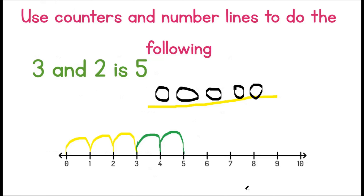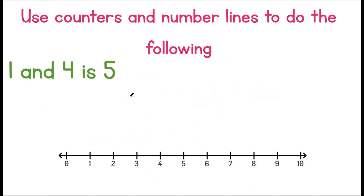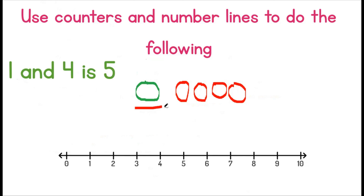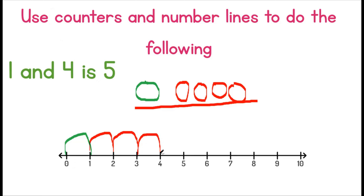Let's do a few more. One and four is five. We count one, then one, two, three, four. This gives us five. Let's draw this on the number line: one, then one, two, three, four. Our number is five. Great job — you're catching on real quick. One and four is five.